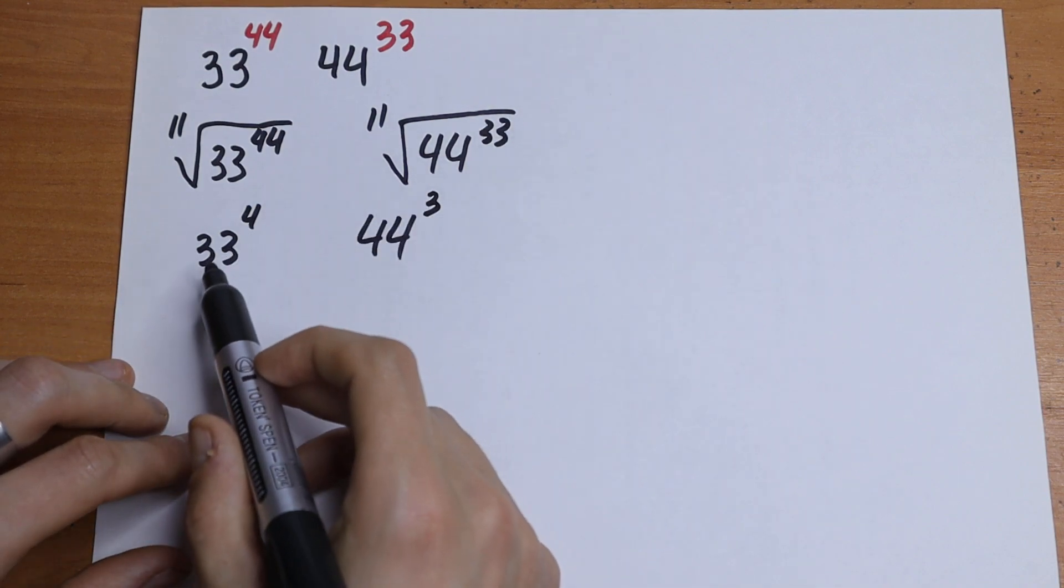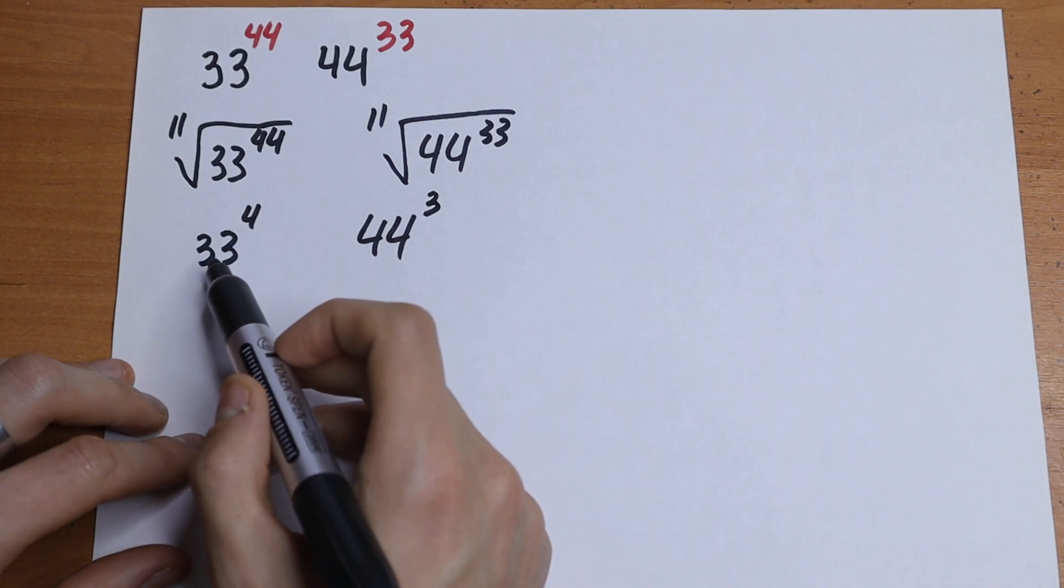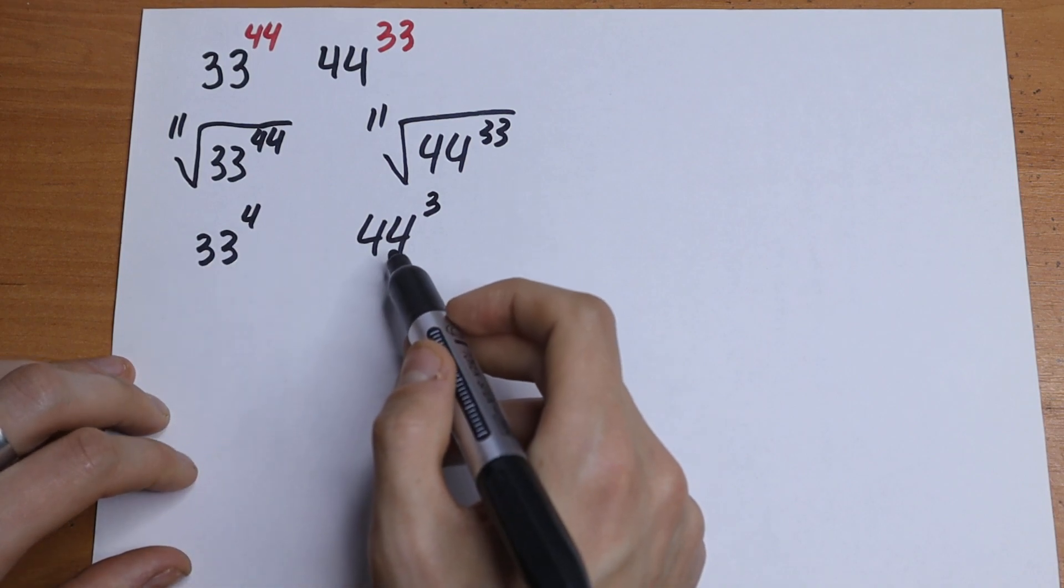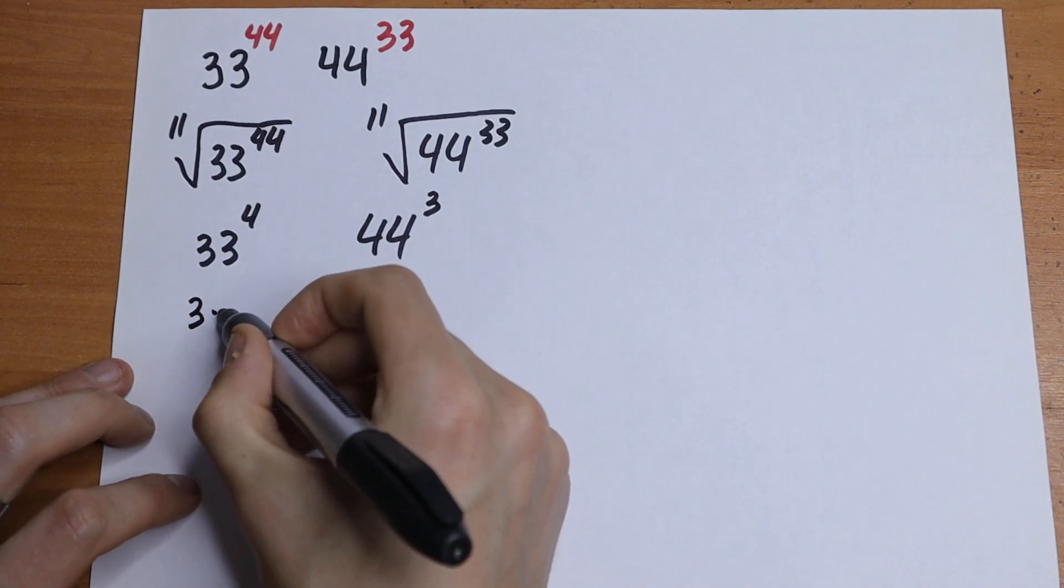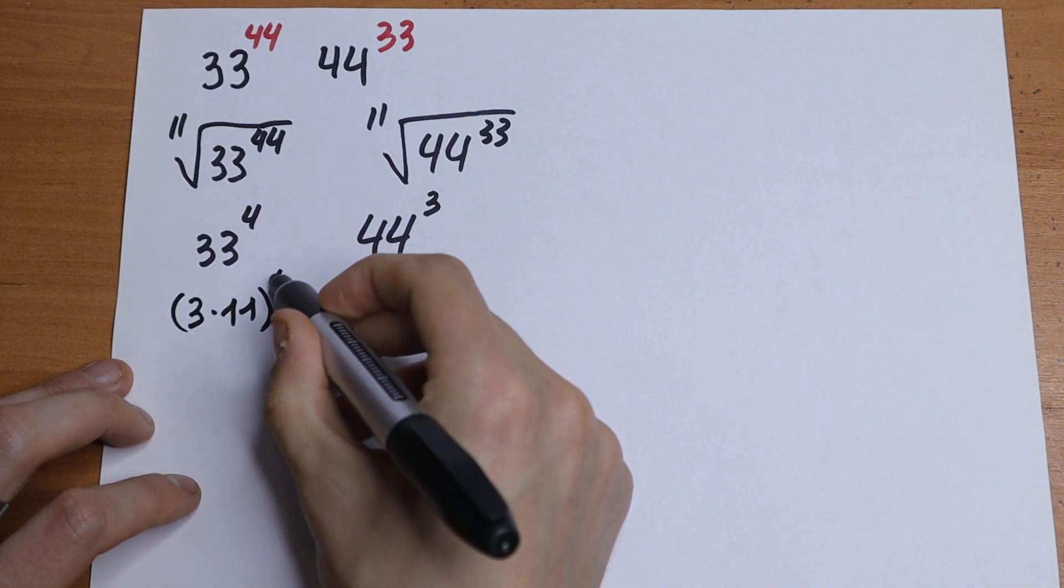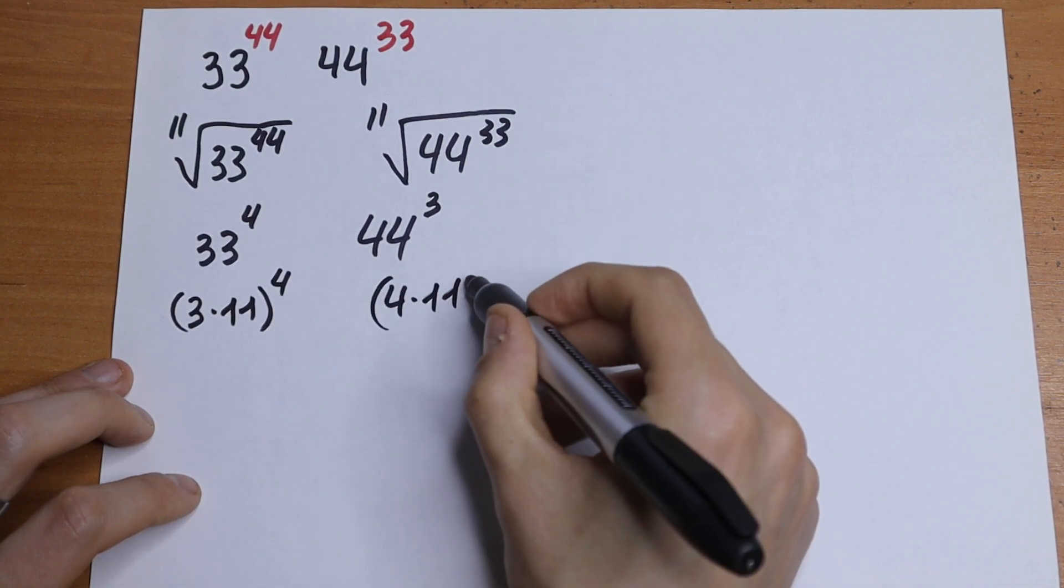We can express this 33 and this 44 using 11. So this will be equal to 3 times 11 and this will be equal to 4 times 11. So let's write this 3 times 11 to the 4th power and 4 times 11 to the 3rd power.